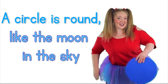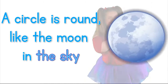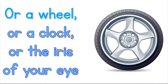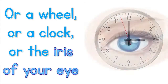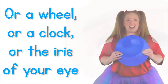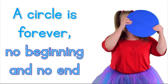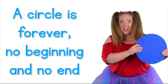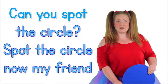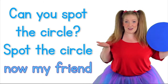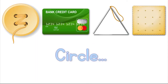A circle is round like the moon in the sky, or a wheel, or a clock, or the iris of your eye. A circle is forever, no beginning and no end. Can you spot the circle, spot the circle now my friend? Circle!